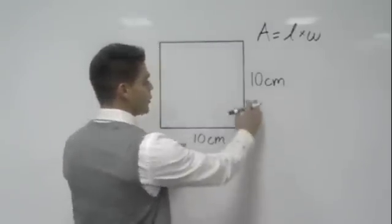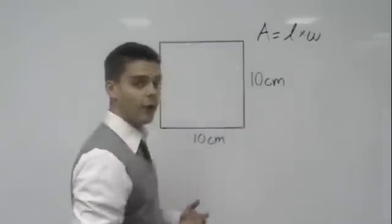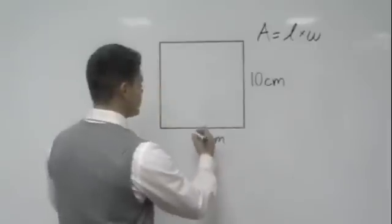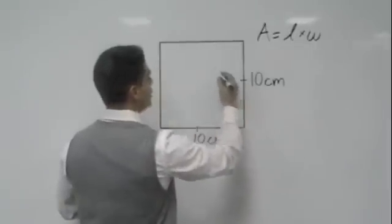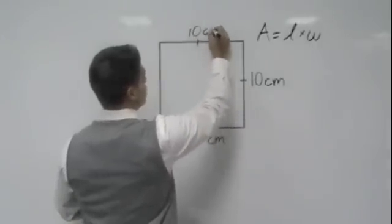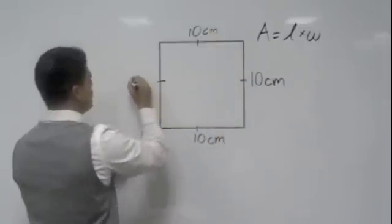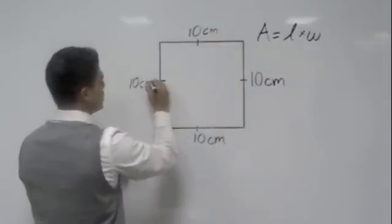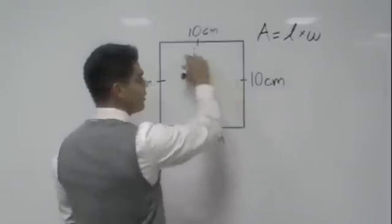How do we find the area of a square in this case? Well, first of all, how do I know it's a square? Because my sides are the same. So this would also be 10 centimeters and this side would also be 10 centimeters, and I put these little marks on here to show you they're all the same.